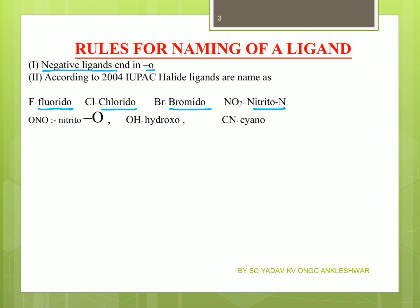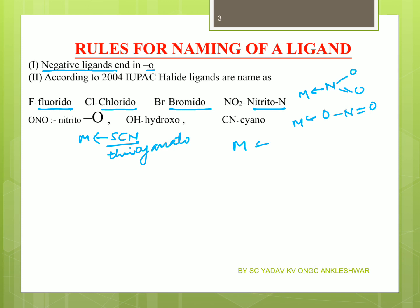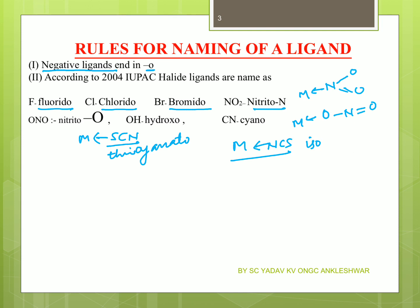For nitrito-N: the nitro group, when it combines with the metal through nitrogen, you call it nitrito-N. If it combines with the metal through oxygen, you call it nitrito-O. Similarly, cyanato, isothiocyanato — the SCN group, when the ligand attaches through sulfur, it is called thiocyanato; if it attaches to the metal through nitrogen, you call it isothiocyanato. So all negative ligands end with 'O'.